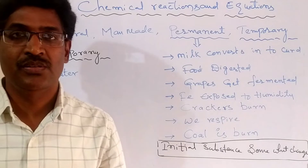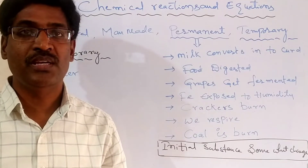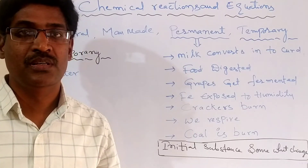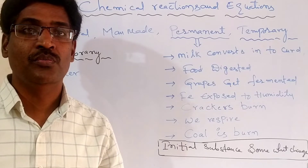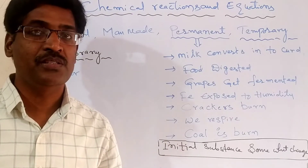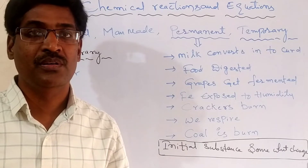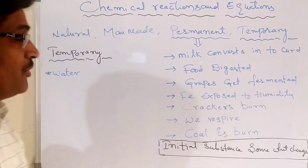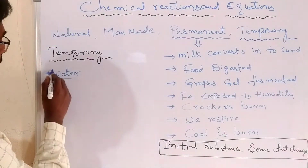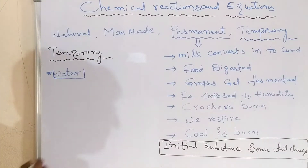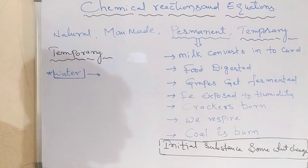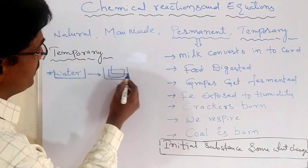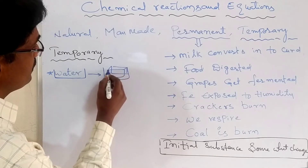Now, what is a temporary change? Temporary means there is no change in composition. If composition changes, that leads to a permanent change. Temporary means there is no change in the composition. To explain temporary change, take some water in a beaker and keep it in the fridge for a day. Then that water becomes solid, converting into solid form.